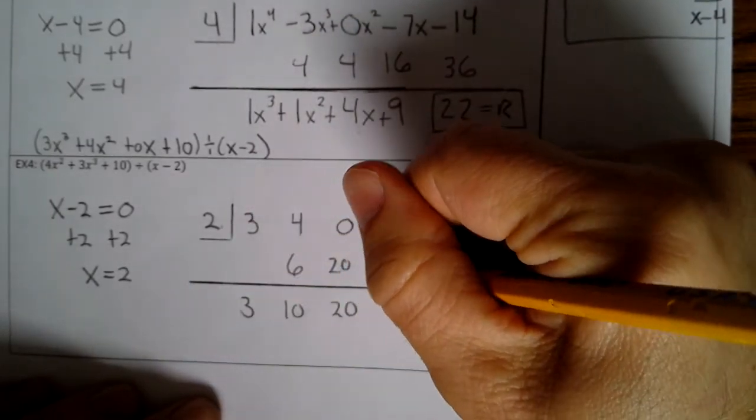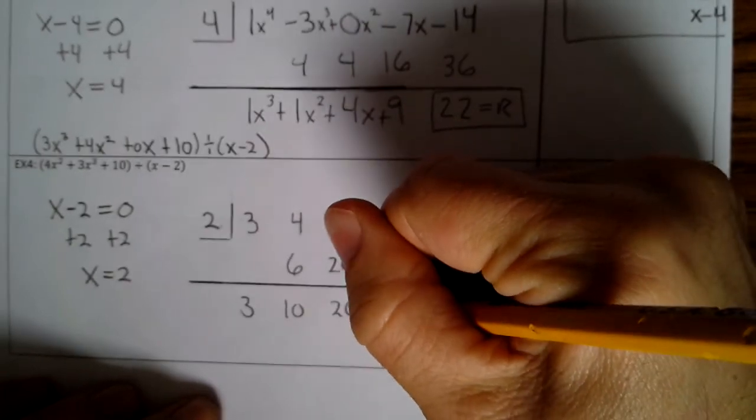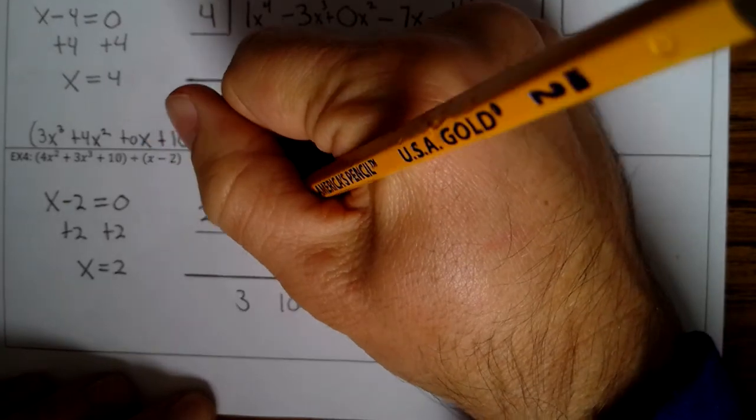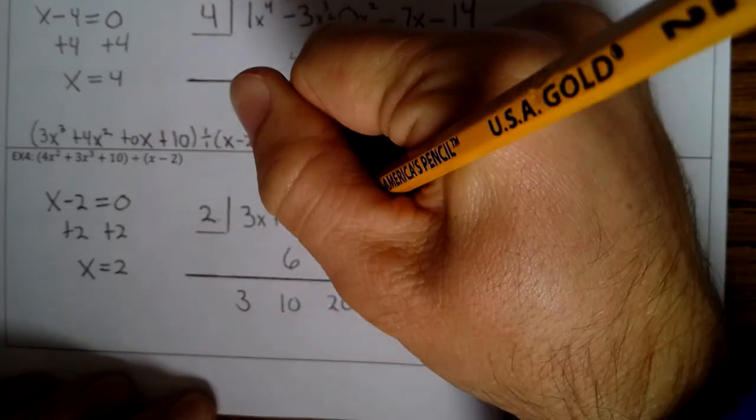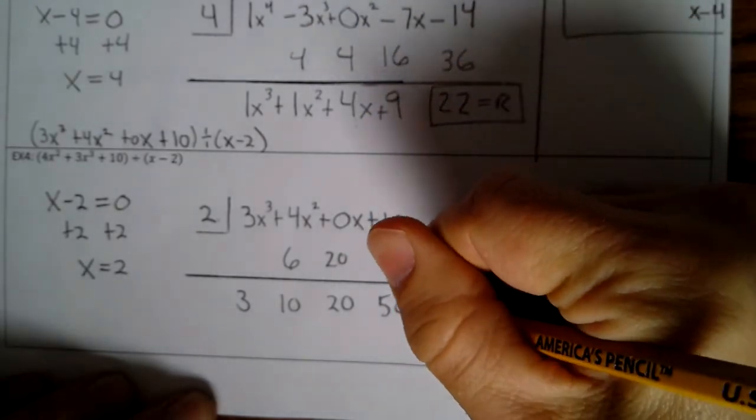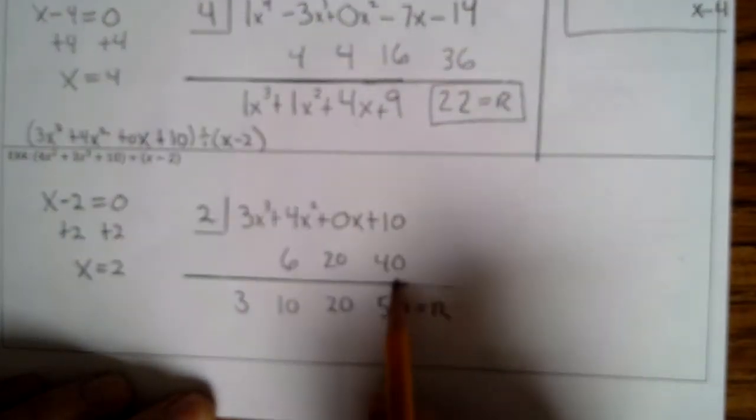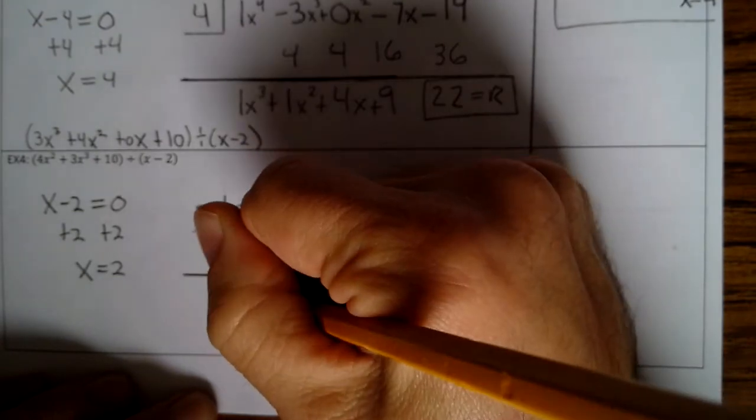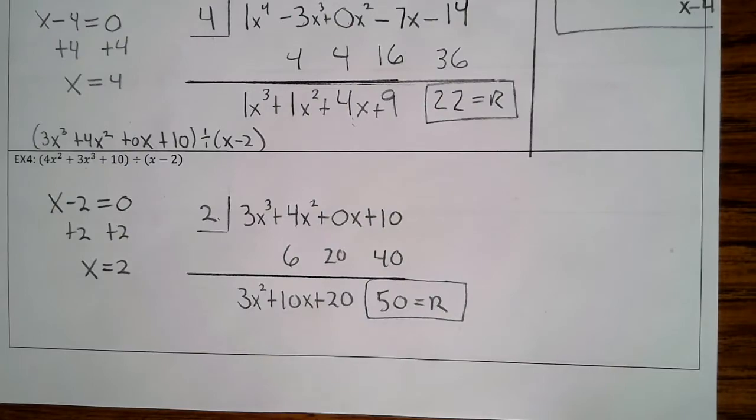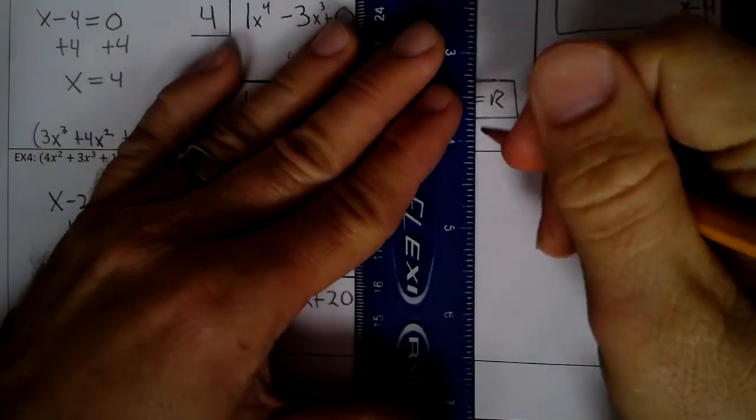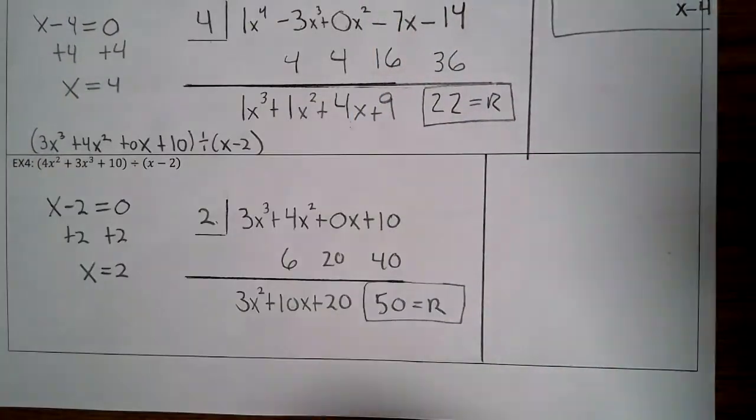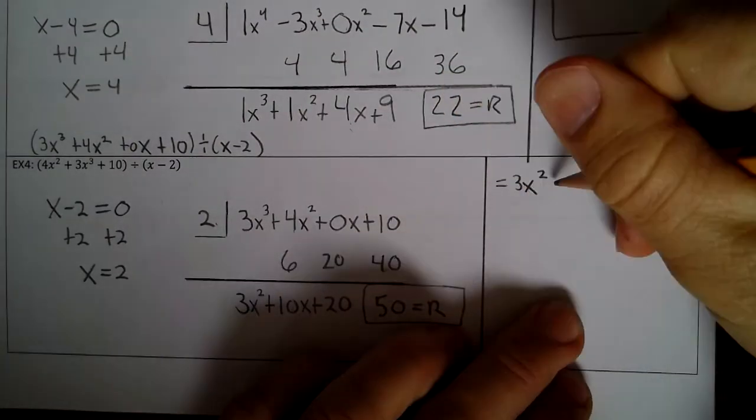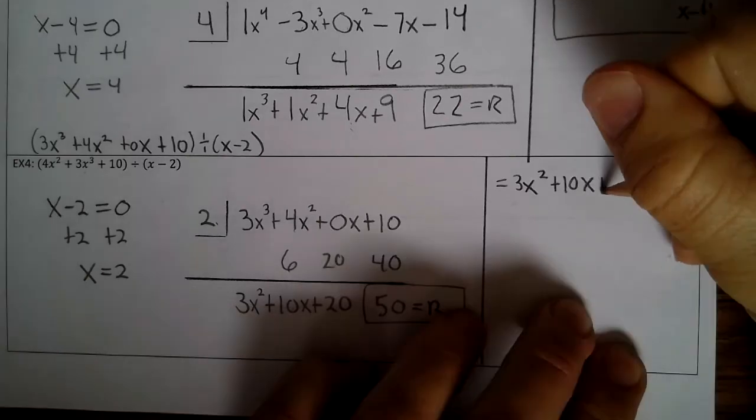Now this was 3x³ + 4x² + 0x + 10. I almost forgot that's the remainder. So this is 3x² + 10x + 20. So that equals 3x² + 10x + 20 plus 50 divided by x - 2.